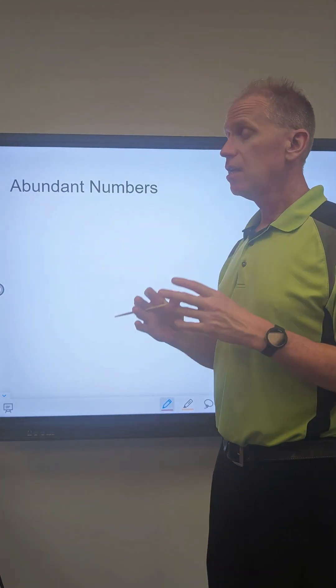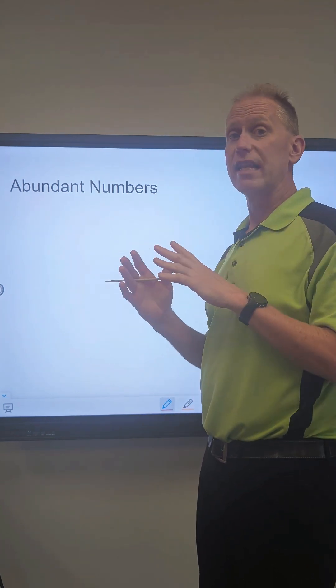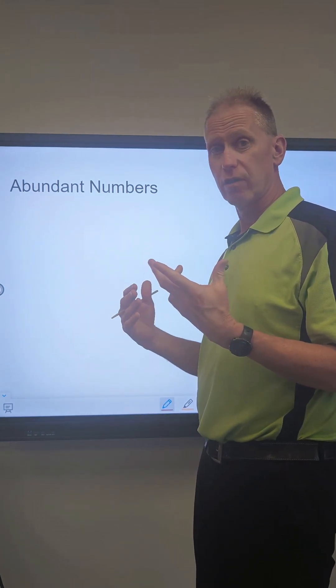So abundant numbers: if you add up all the factors for a number, it's going to be more than that original number, but you don't include the original number.